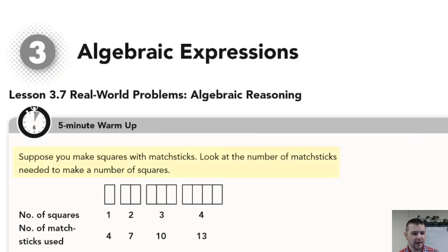The instructions say, suppose you make squares with matchsticks, and we see a diagram below. Our squares are looking very rectangular, but we'll disregard that and continue. Look at the number of matchsticks needed to make a number of squares.